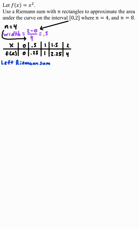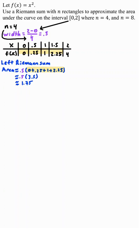To find the left Riemann sum, we're going to use the four left f of x values. So the area is about 0.5 — which comes from the width — times the sum of these four values. Simplify this, you get about 1.75.